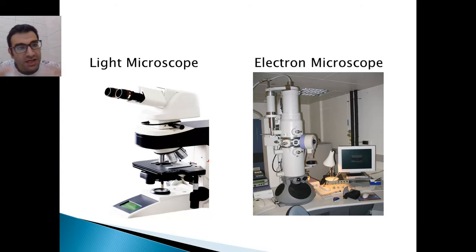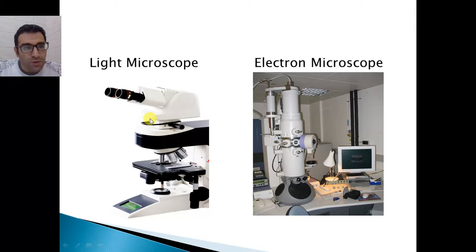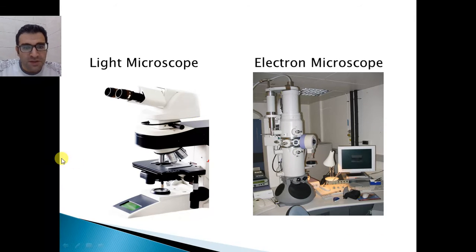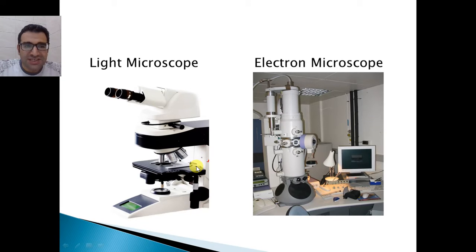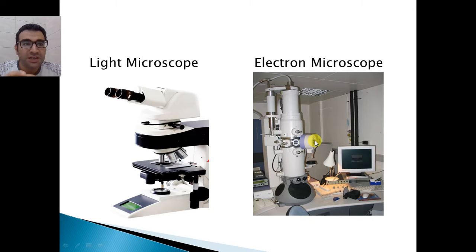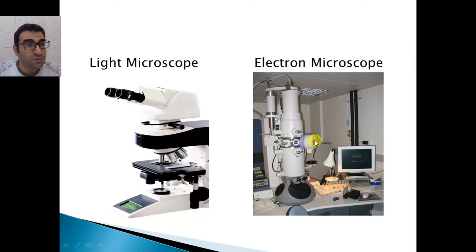In biology, in biological research and biological studies, we have two types of microscopes: the light microscope, here on the left side of this slide, and the electron microscope. The electron microscope is much more developed than the light microscope. The light microscope is the classic microscope used by school and college students, and it has many more limitations. The electron microscope has a very high capability and is only found in highly developed labs and universities, and of course it is much more expensive.